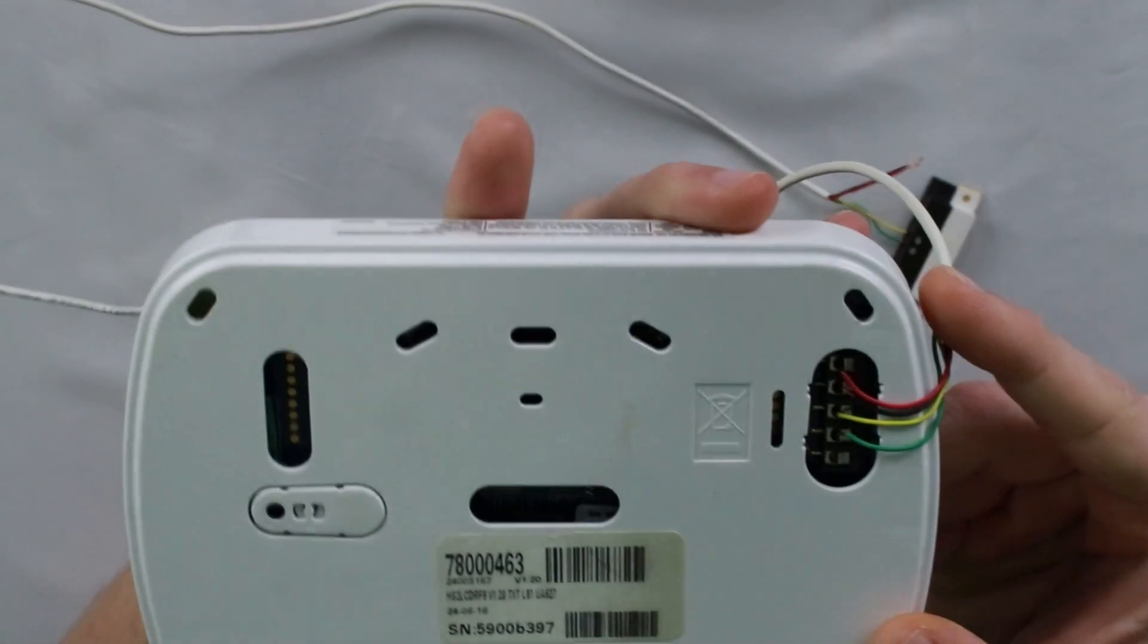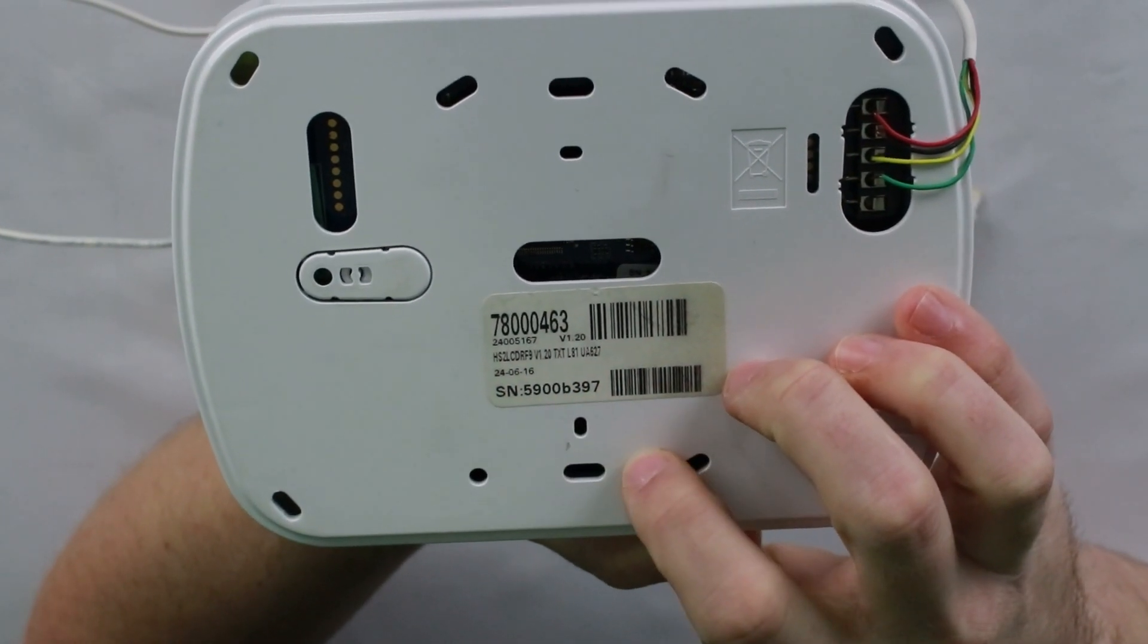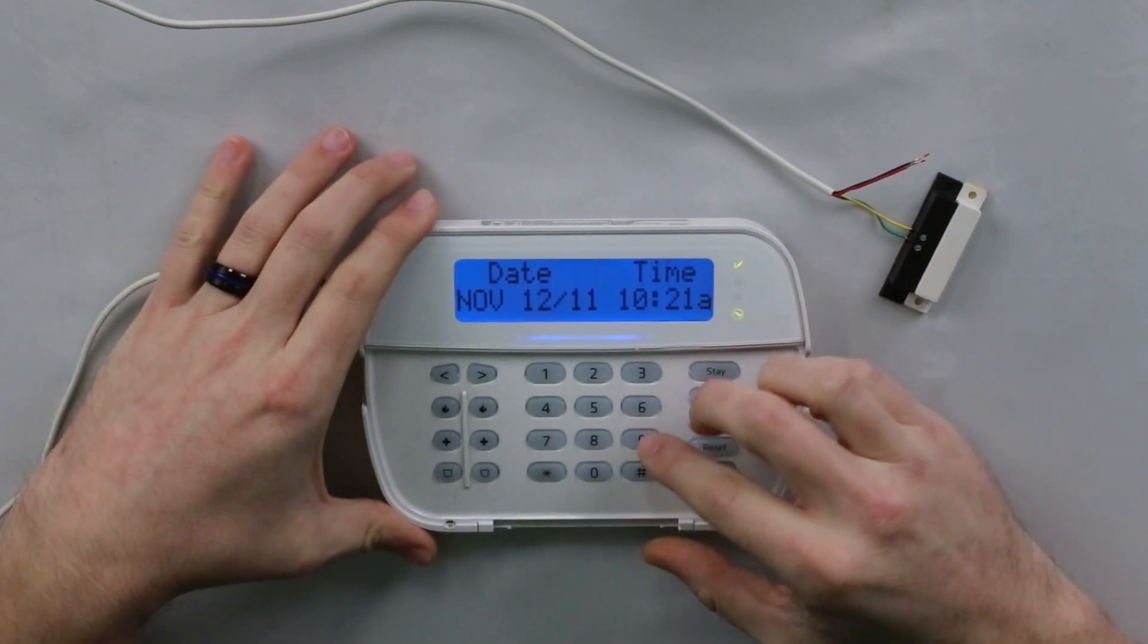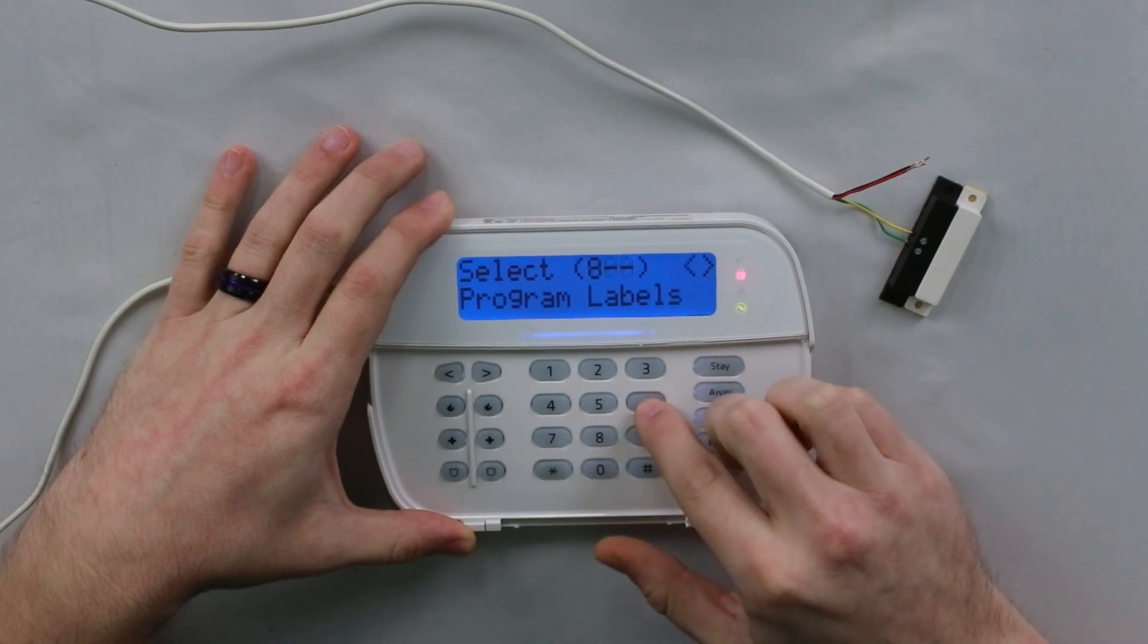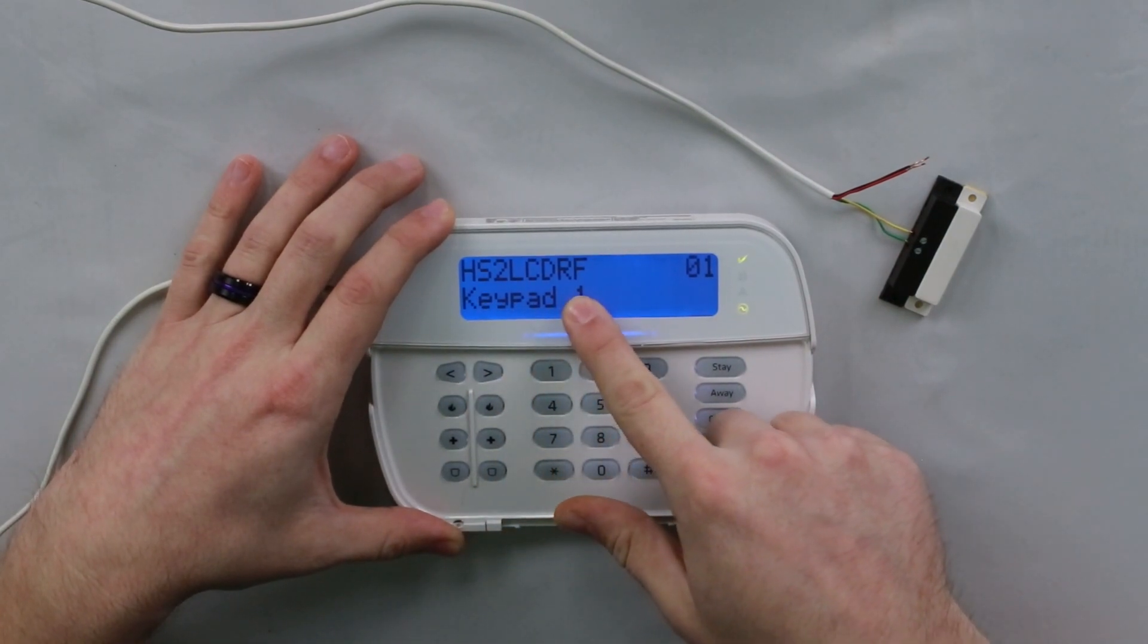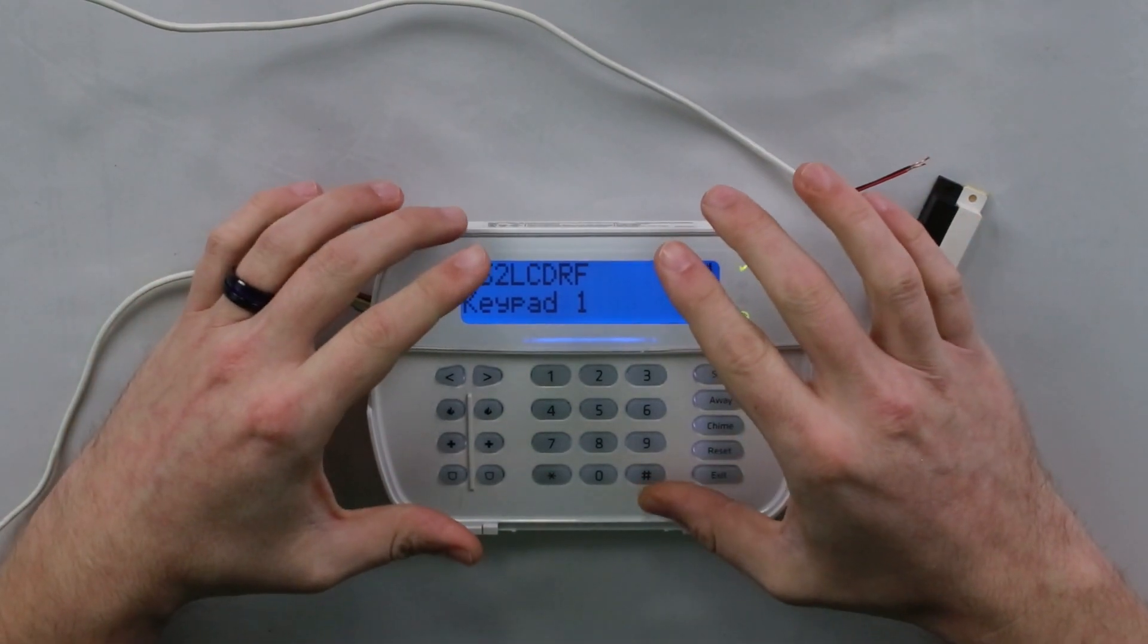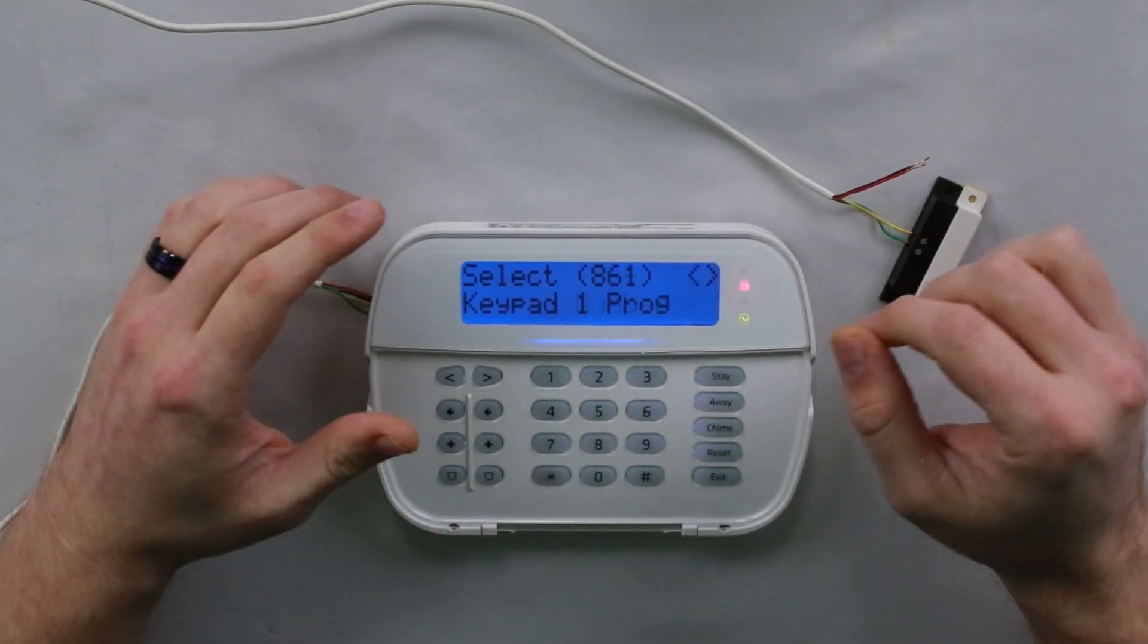It is unlikely that you'll have a voice keypad, but it is possible. So let me show you the part number right here. As you can see on mine, I have the HS2 LCD RF9. If there was a V in that part name, it would be a voice keypad. You can also see that whenever you go into section 860, whenever you're looking at the keypad itself, it tells you it's HS2 LCD RF. If there was a V in there, it would stick the V in the part name there, and you would know that you have a voice keypad. So option five is only if you have a voice keypad.